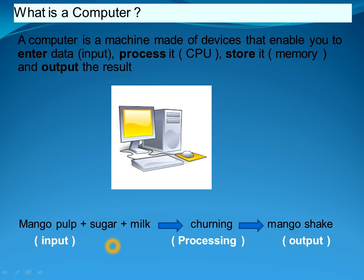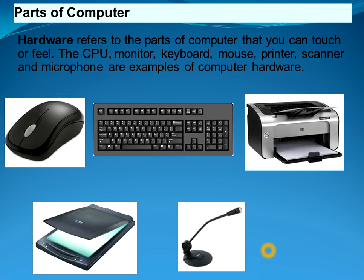For example, if you want to make a mango shake, you need mango pulp, sugar, and milk. These act as input for a computer, the churning machine acts as a processing device, and the mango shake is basically the output.